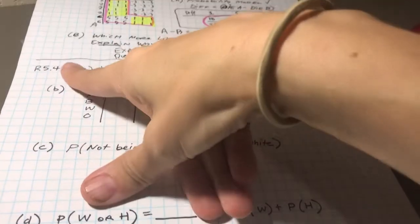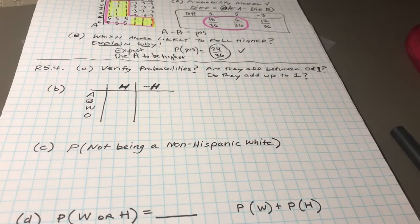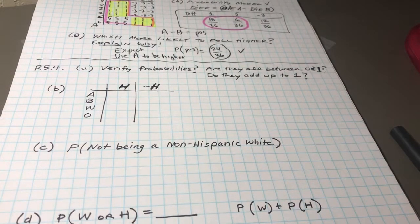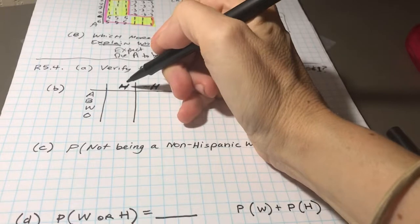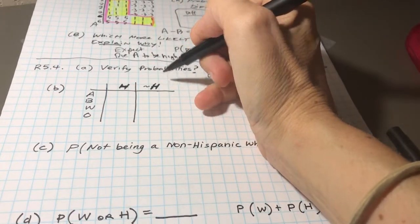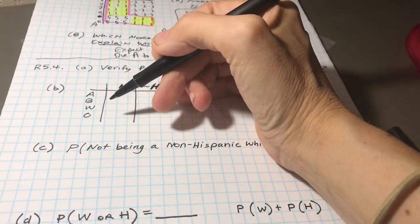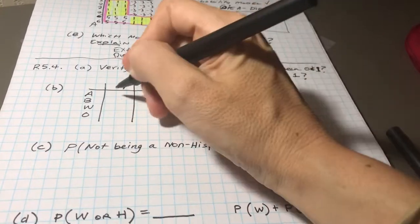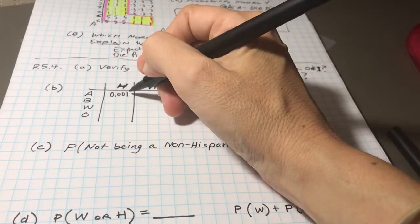Hi, welcome back. We have review question 5.4 and it's information put together from a Census Bureau. They decided to collect information asking the question: are you Hispanic or not Hispanic? And then they also allow you to identify with more than one ethnicity or background. So this was the data they collected.